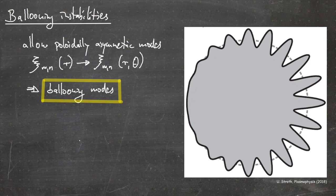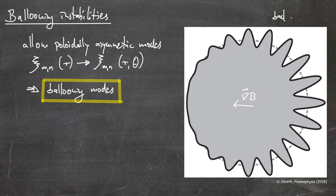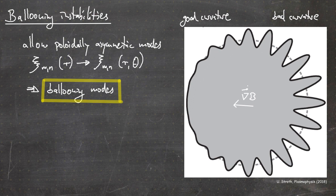On the left hand side you can see an example: here we have the poloidal cross-section with the magnetic field gradient. The modes have larger amplitude on the low magnetic field side, on the outboard side — this is the bad curvature region. On the high field side is the good curvature region, where the modes have reduced amplitude. These are ballooning modes.